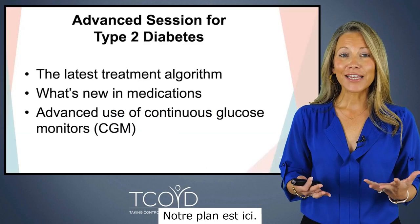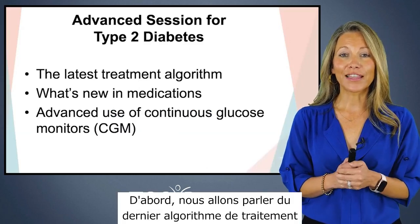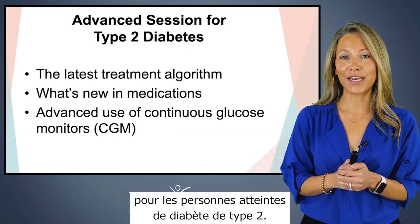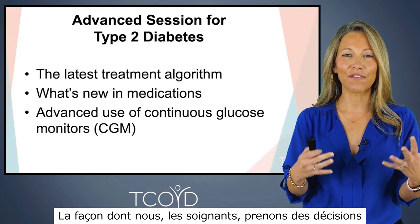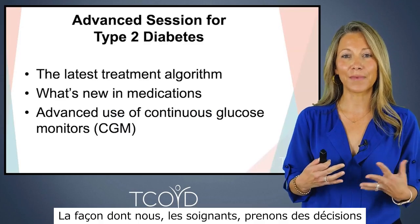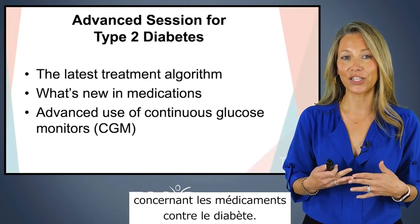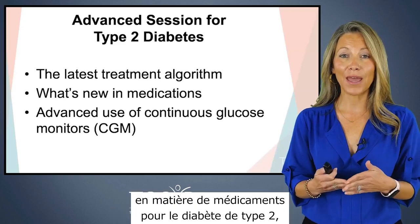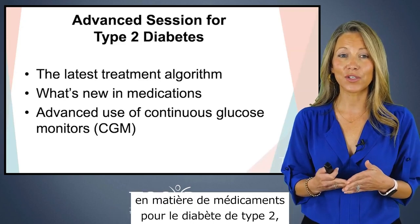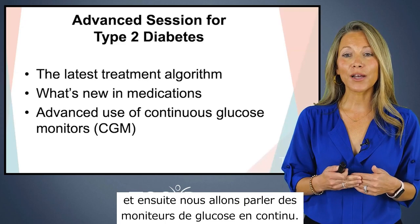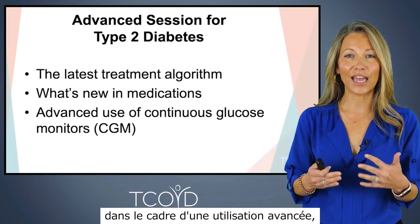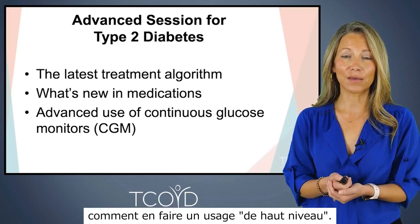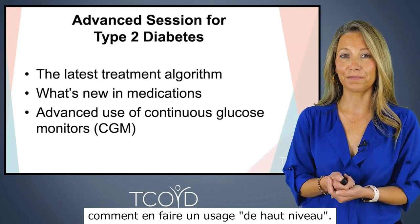Our outline is here. First we're going to talk about the latest treatment algorithm for people with type 2 diabetes — how healthcare providers make decisions about diabetes medications. Then I'll tell you what's new in medications for type 2 diabetes, and then we're going to talk about continuous glucose monitors and how to use them in more advanced ways.